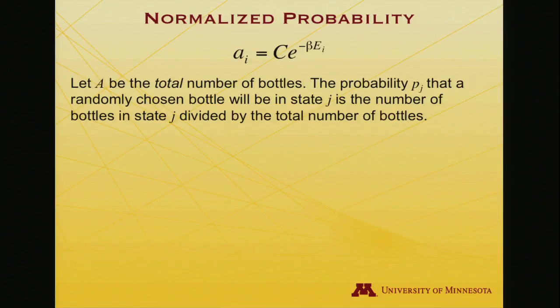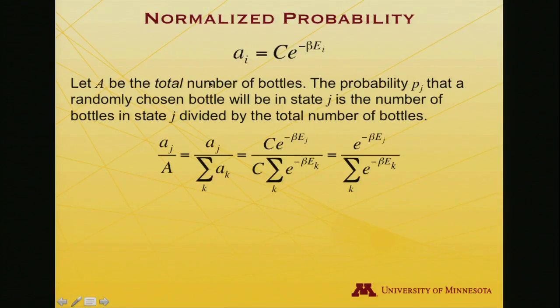In that case, the probability, indexed by j, that a randomly chosen bottle will be in state j, that is having characteristic energy e sub j, is the total number of bottles in that state divided by the total number of bottles in the cooler. That is, a sub j divided by capital A.